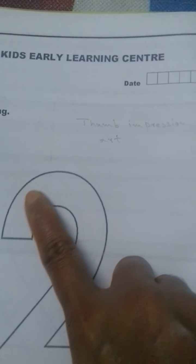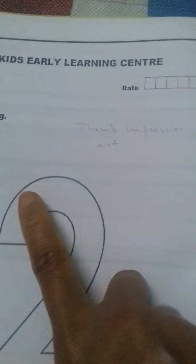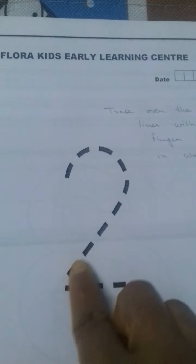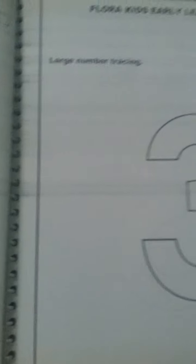Then the next activity you can give thumb impression art. Dip the child's thumb finger in the water paint and you can press on the number two. And again this is tracing—just dip the child's finger in water color and trace over. Like this you can give various activities for each number.